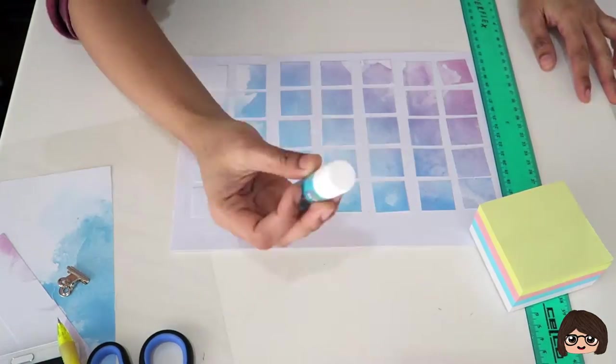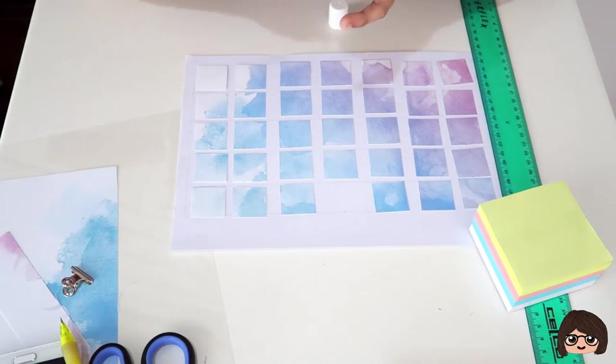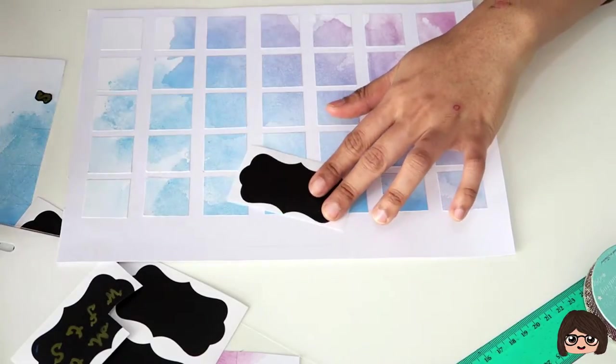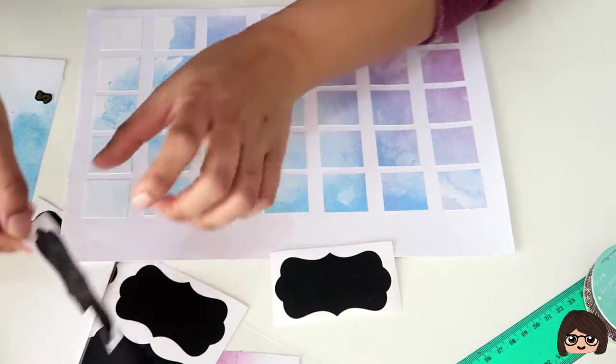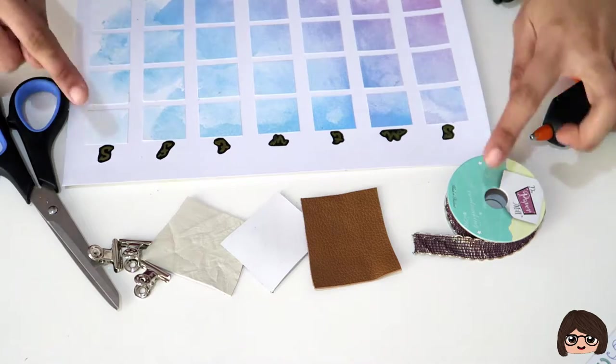I made 35 squares of 3 by 3 centimeters just to put into my calendar. For my day title, I got this chalkboard sticker and I used a gold marker to put in Sunday to Saturday dates onto my calendar.